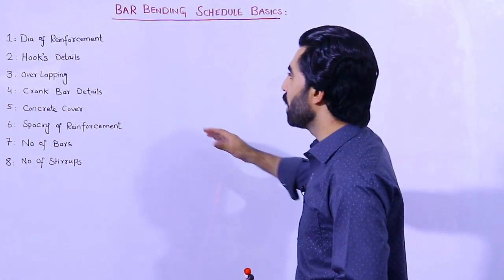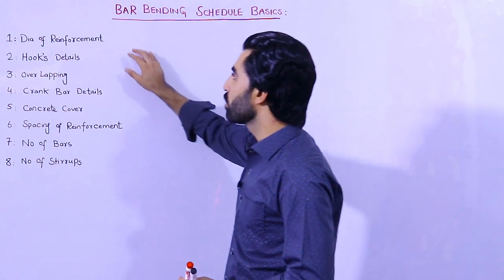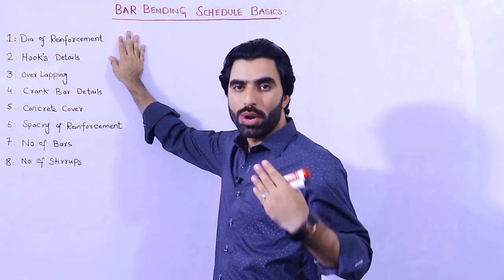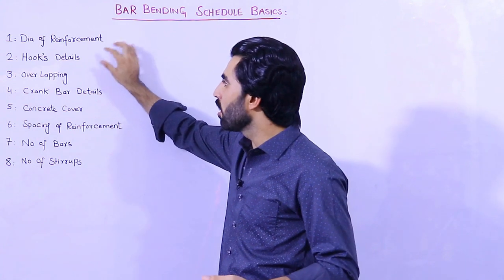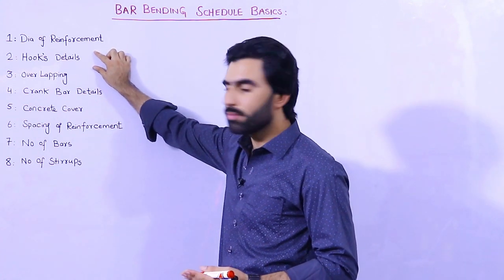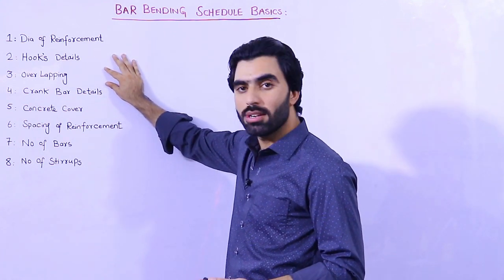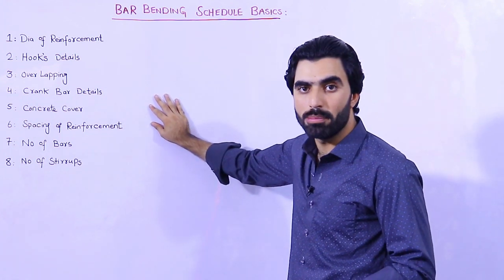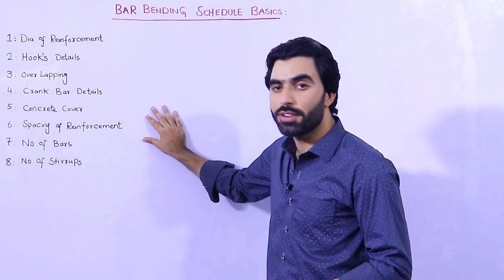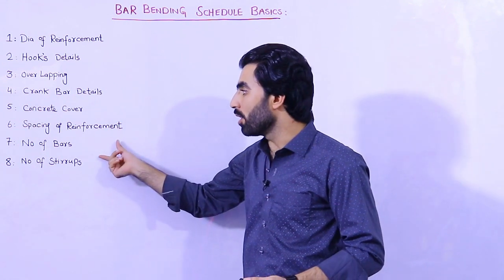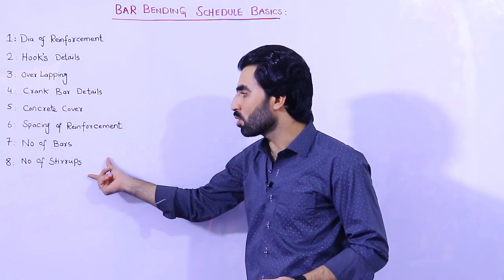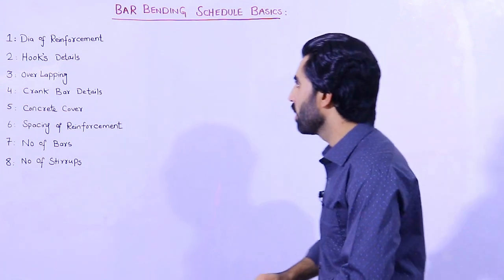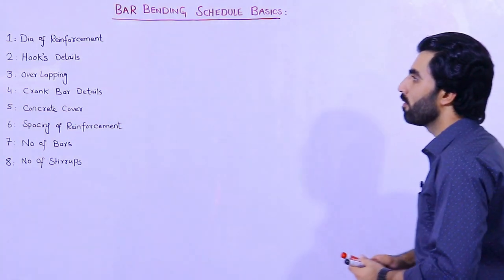In basics of bar bending schedule I will guide you for: diameter of reinforcement, how to find the weight of steel for different diameters, hooks details, overlapping, crank bar details, concrete cover for beam, column, etc., spacing of reinforcement, numbers of bars, and the last one is numbers of stirrups.